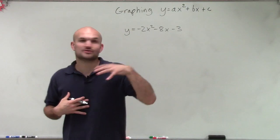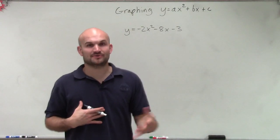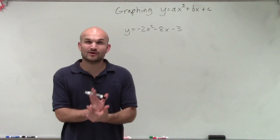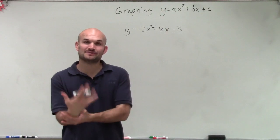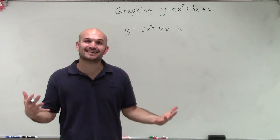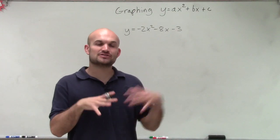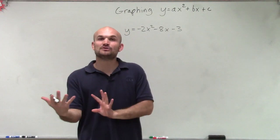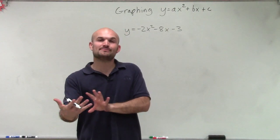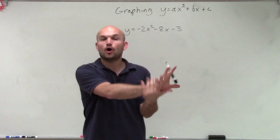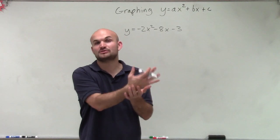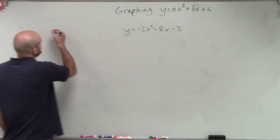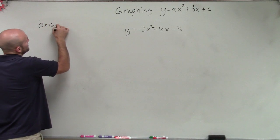What we notice is the y-coordinate to the left and to the right are exactly the same. So what I'm going to do now is just choose two points either to the left or to the right, and then we'll use the axis of symmetry to reflect over it to find our exact same coordinates. So the first thing we need to do is find our axis of symmetry.